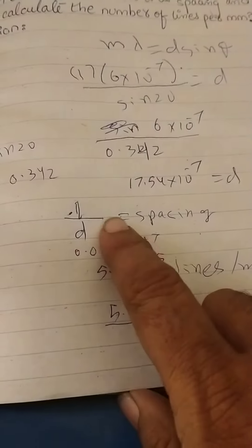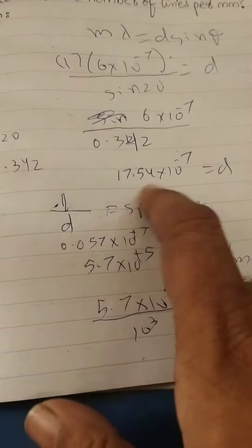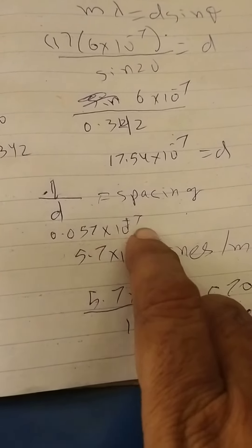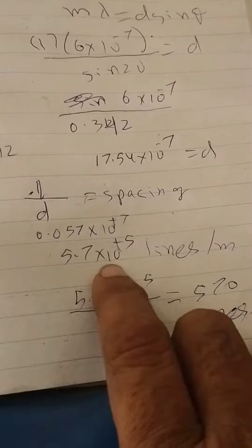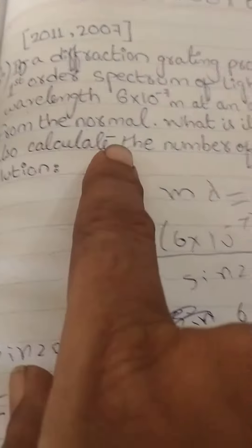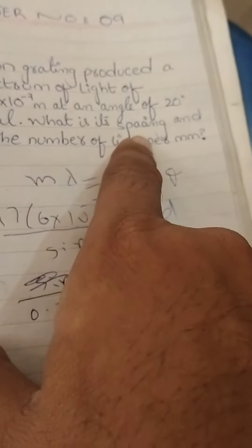Ab spacing hoti hai 1 upon d. 1 ko jab is puri value se divide karein to ho jayega 0.057 × 10^7 ya kehlen 5.7 × 10^5 lines per meter. Yani pehli wali cheez hame pata chal gayi spacing ki value.